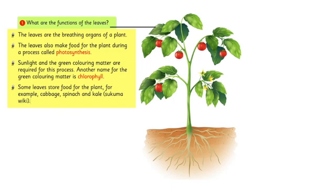Some leaves store food for the plant, for example cabbage, spinach, and kale.